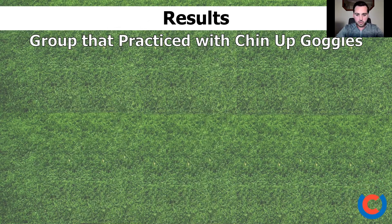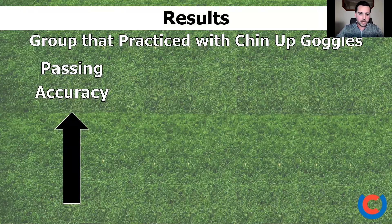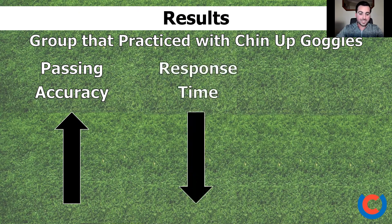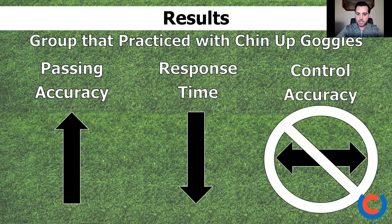The results for the chin-up goggles were quite convincing: we found a significant increase in pass accuracy for the groups who practiced with the goggles, including the team in phase three. We had a significant decrease in response time — they were able to pass the ball faster than in the pre-test. Again, we saw no significant change in control accuracy. One reason we potentially saw no change in control accuracy is that participants were allowed to self-select how to control the football, so we didn't place significant restraints on that variable.